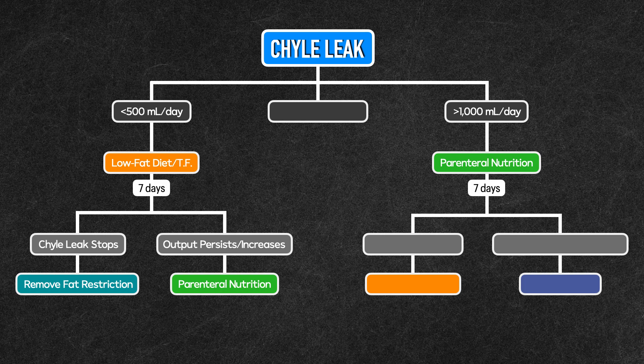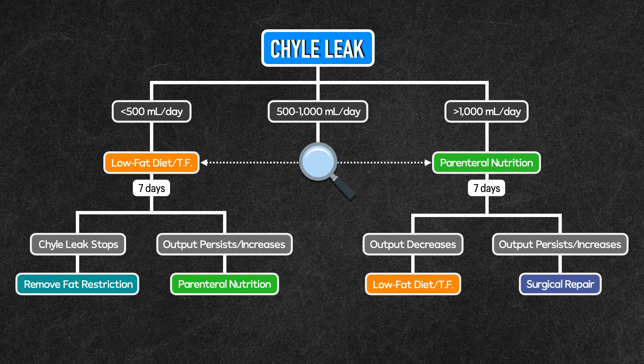Patients with an initial output of greater than 1000 milliliters per day were not given a diet or enteral feeds, and were started on parenteral nutrition for 7 days instead. If the output decreased after 7 days, the patient was transitioned to a low-fat diet or enteral feeds until it stopped. If the output persisted or increased during the 7 days, the patient underwent surgical repair. Any patient with an initial output of 500 to 1000 milliliters per day underwent further assessment to see if the output was increasing or decreasing. Patients with decreasing output went into the less than 500 milliliter pathway and received a low-fat diet or enteral feeds. Patients with increasing output went into the greater than 1000 milliliter pathway and received parenteral nutrition.